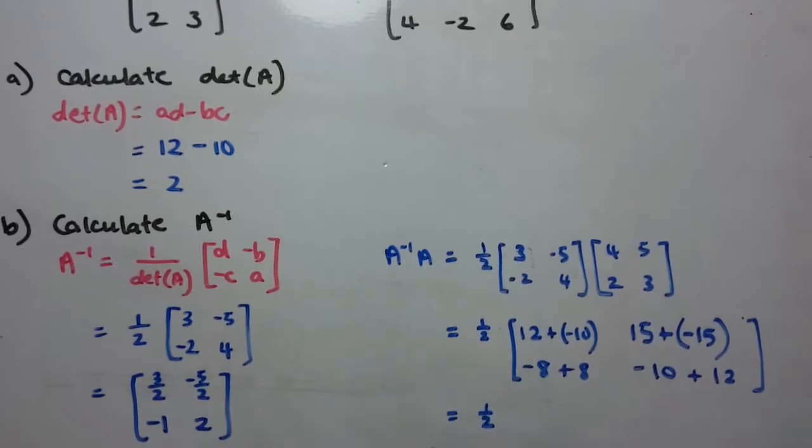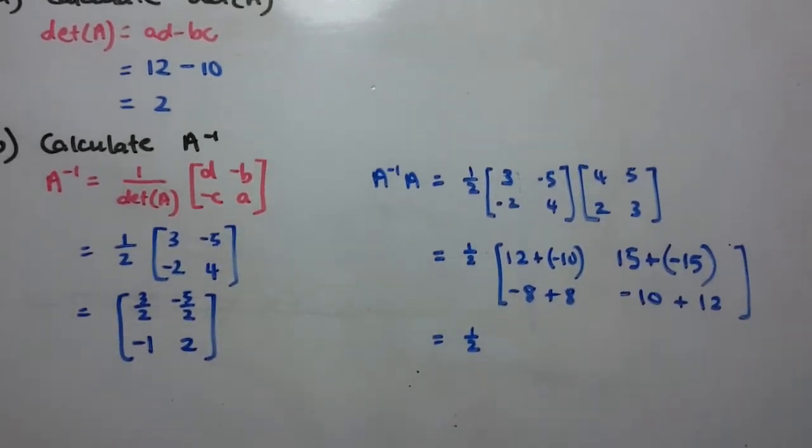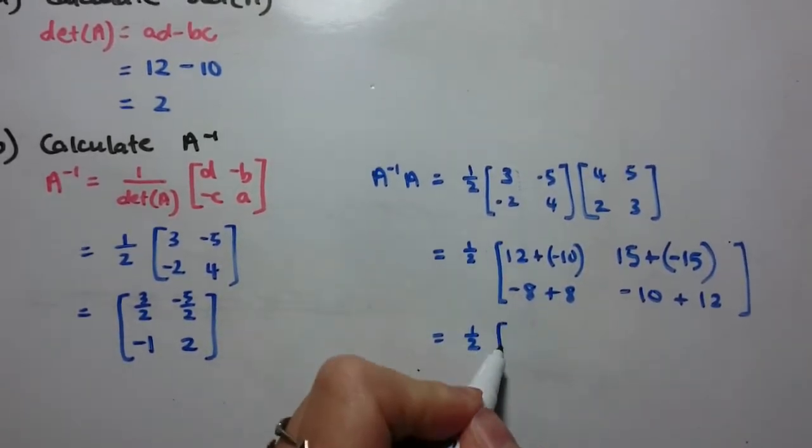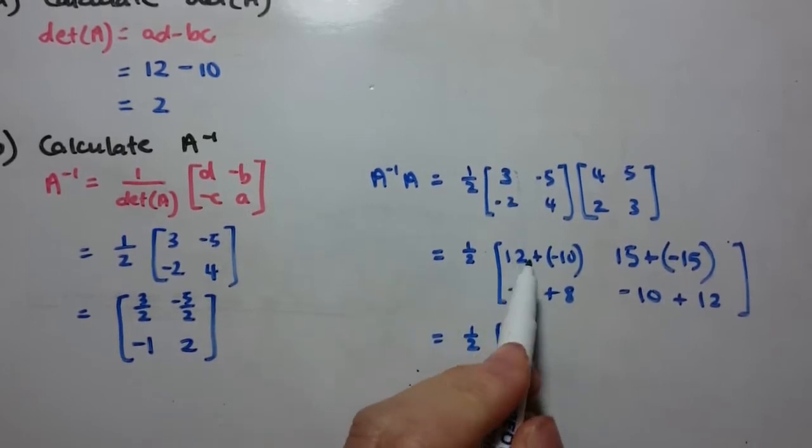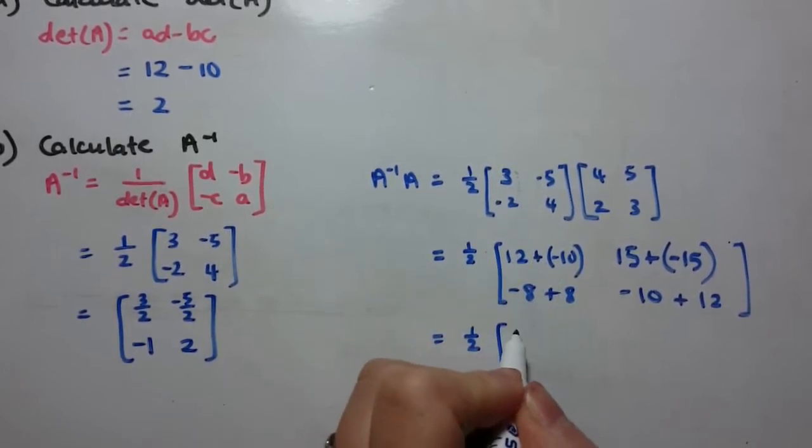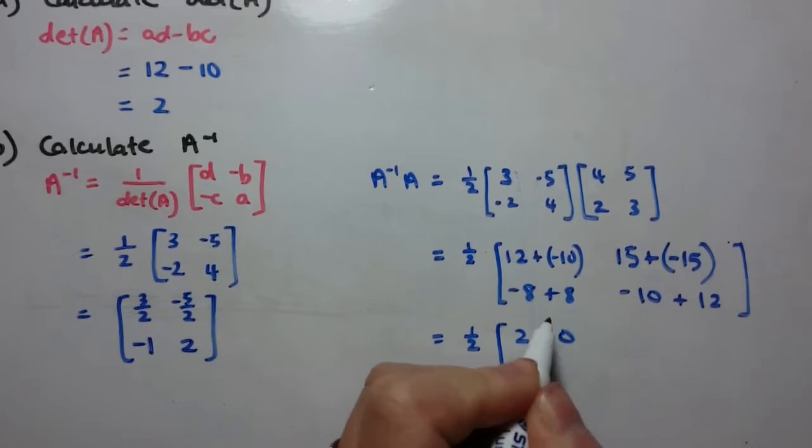Don't forget that half there, I'm just going to move this up so it's more visible. Just clean up what's inside the matrix, so 12 plus negative 10 is 2, we've got 0 here, 0 there, and 2 here.